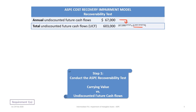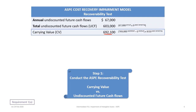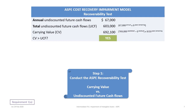We then compare the total undiscounted future cash flows of $603,000 to the carrying value of $692,100. The carrying value is calculated as $769,000 capitalized — carried forward from Tutorial 23A — with zero salvage value and a 10-year life. At the end of 2021, nine years remain, so the carrying value is $769,000 × (9/10) = $692,100.